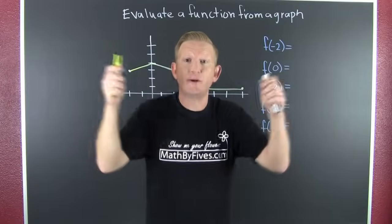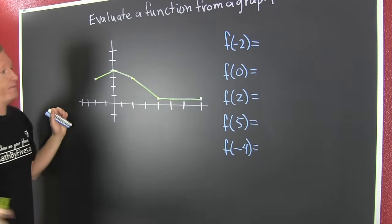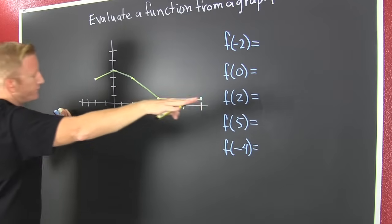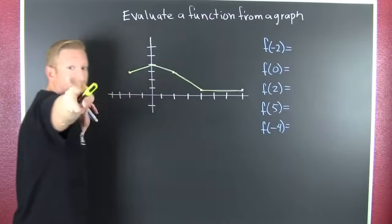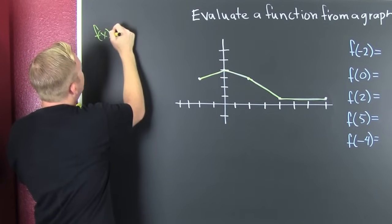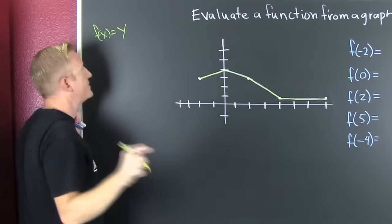We're evaluating a function from a graph. What do I have here? I have f of x, the function formerly known as y, kind of like Prince. What does this mean?